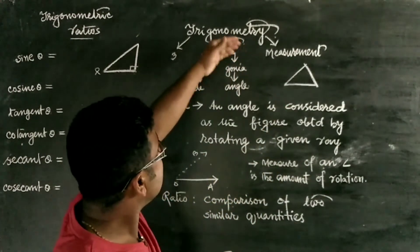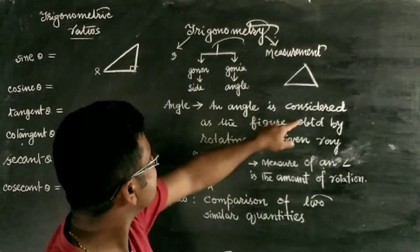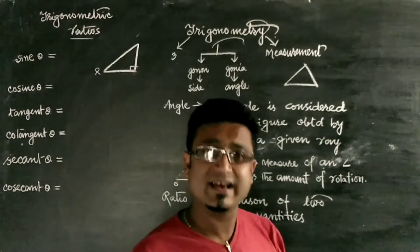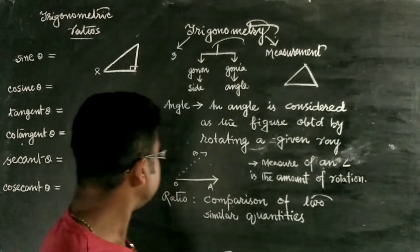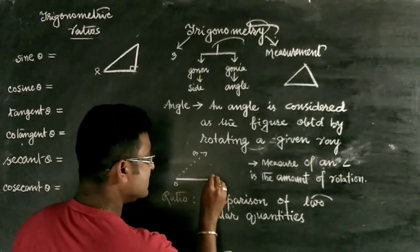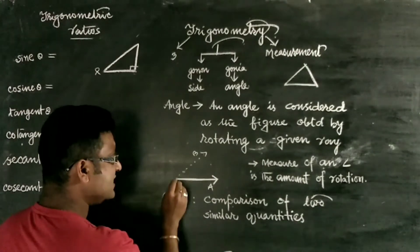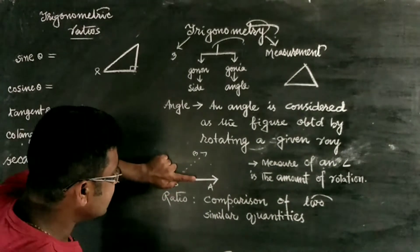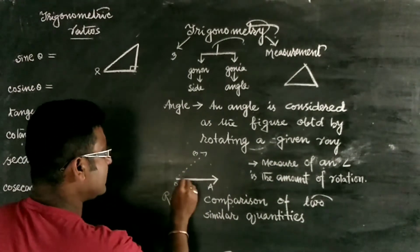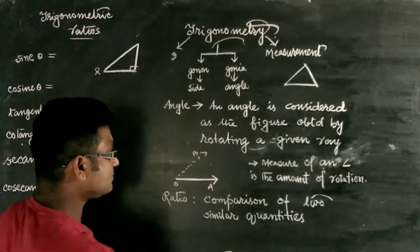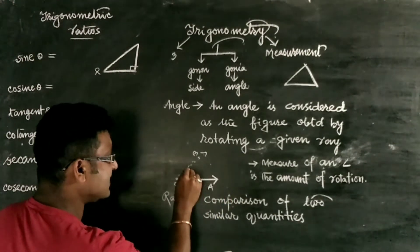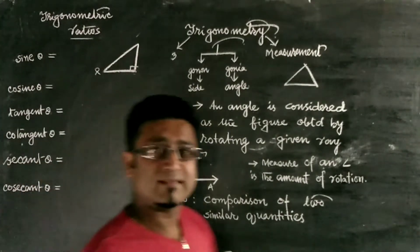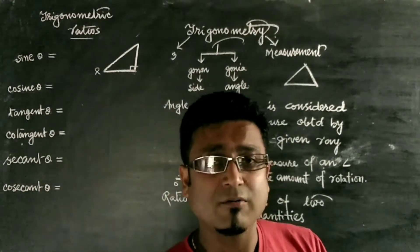Since we have used the term 'angle', what is an angle? An angle is the figure obtained by rotating a given ray. In class 7 and 8, you have learned about what is a ray. A ray means a line with an arrow on one side and a fixed point on the other, which can be extended to infinity. When this ray is rotated, you get an initial ray and a final ray, and the measure of the angle is the amount of rotation.